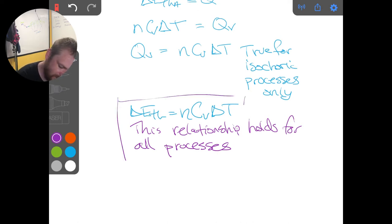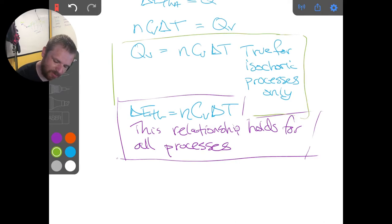This is an important distinction here, that this delta E thermal equals NCV delta T is true for all processes, whereas QV is equal to NCV delta T. This is true for isochoric processes only.